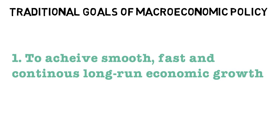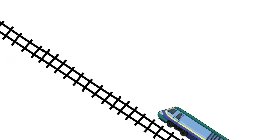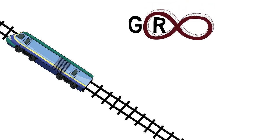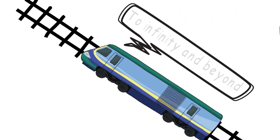The first goal that most economists would agree with is to achieve smooth, fast and continuous long-run economic growth. This is a particular focus of many governments and economists because continuous growth will lead to a range of healthy activities in the economy, such as employment growth, output growth, and productivity growth. Traditionally economists assume that growth will rise infinitely with no ceiling or cap.